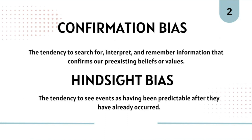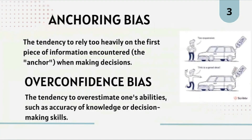Second is hindsight bias: the tendency to see events as having been predictable after they have already occurred. Hindsight bias occurs when people believe, after an event has happened, that they knew it was going to happen all along. For example, after a company's success, investors might say they always knew it would succeed, even though they might not have been so confident before.